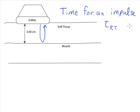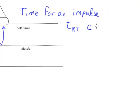Some information that I need to do this is the speed of sound in soft tissue which is equal to 1540 meters per second.